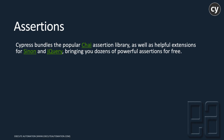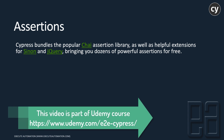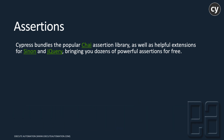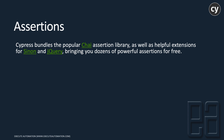In order for that, Cypress bundles the popular Chai assertion library as well as some helpful extensions for Sinon and jQuery, bringing you dozens of powerful assertions for free. All the different assertion libraries required for JavaScript-based automation testing — like Mocha and Chai used in Protractor — are available within Cypress itself. So anytime you install Cypress, everything is there for you.